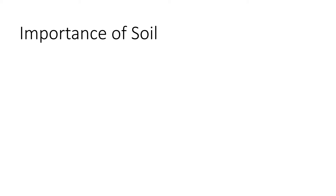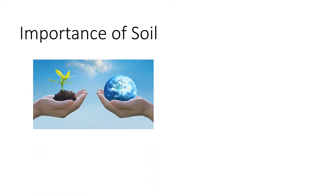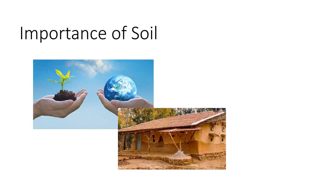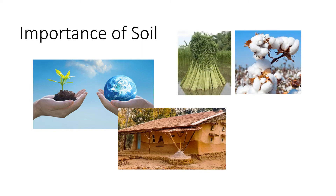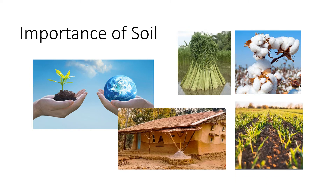All living things on earth depend either directly or indirectly on the soil for their food. We also depend on soil for many other things. In many villages, people use mud to make the walls of their houses. We make clothes from plants like cotton and jute, which in turn need soil to grow. Most people in India depend on agriculture for their livelihood. So soil is very important to us — it is one of our most important natural resources.